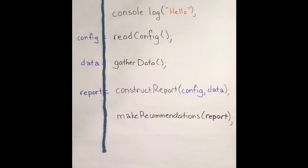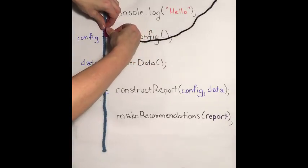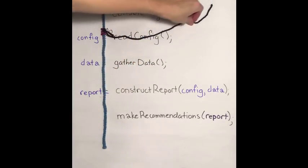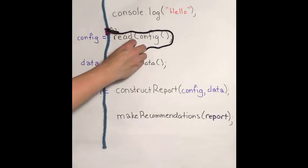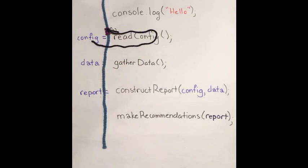So read config isn't going to return the information. Instead, it splits off a new path of execution, and it returns a promise, which is the end of the string, and that string is eventually going to produce a config.